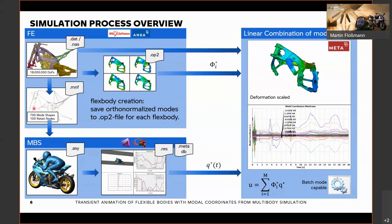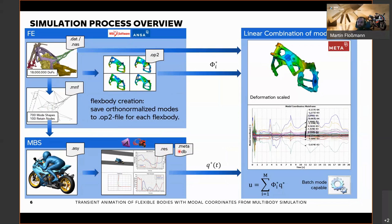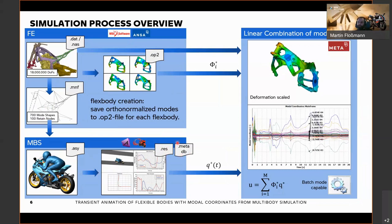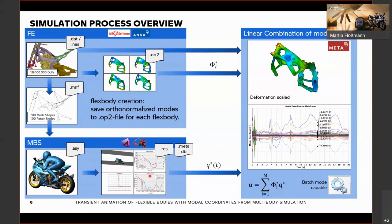The next step is putting these MNF files into our multi-body simulation full vehicle model assembly. We use Adams — and in the motorcycle department, VI Motorcycle — and run a simulation. We hit the track virtually and produce results. We get a result file from Adams, which can also be converted into a metaDB. Meta is already able to read results from Adams and convert them to metaDB for faster data processing. The good thing about this process is that we automatically generate the modal coordinates — the weighting factors — and we just have to combine them with the mode shapes.